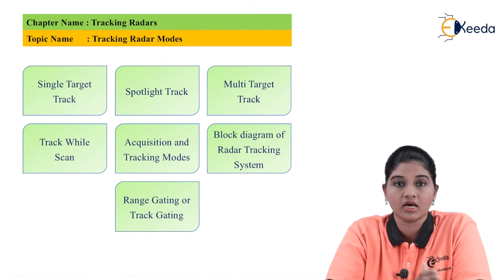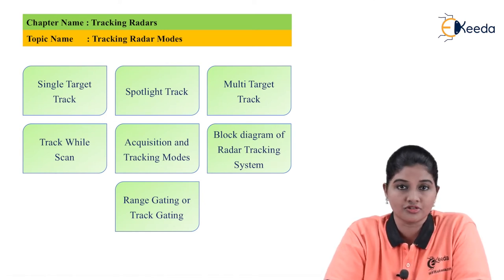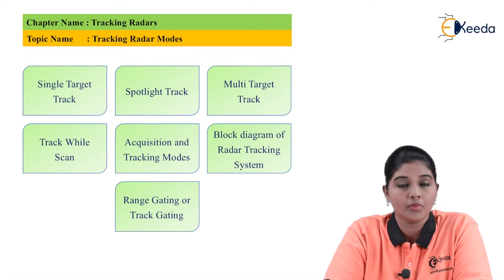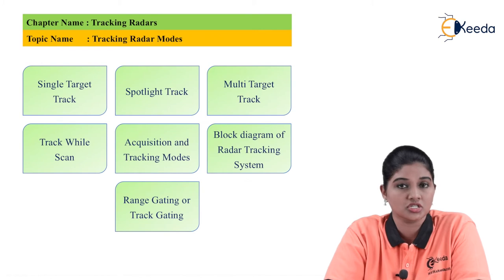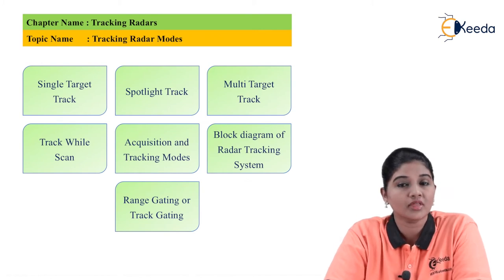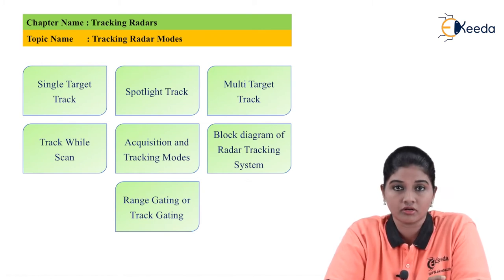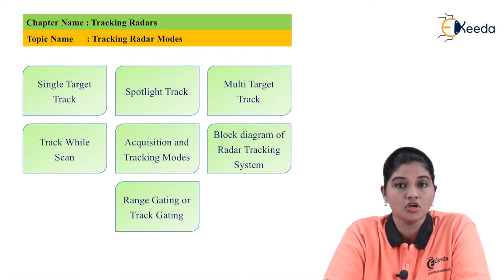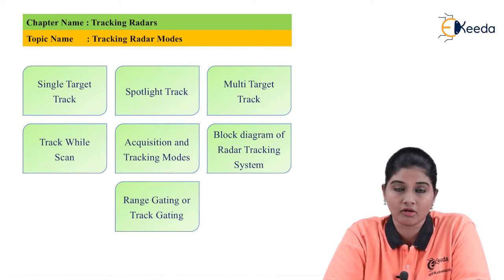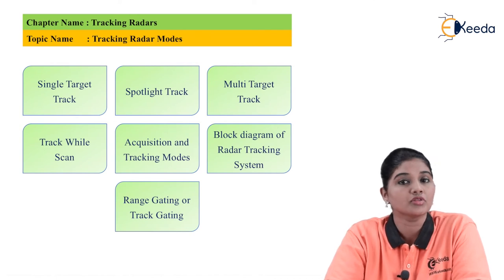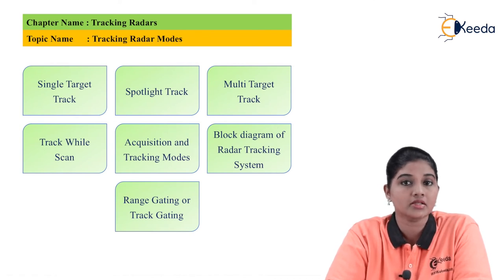Spotlight tracking provides less accurate data related to the position and location compared to single target track radar. This is because while scanning or tracking one object, another object may change its position, and because of that the accurate position of the object cannot be detected by the radar system. This is considered a disadvantage of spotlight tracking.